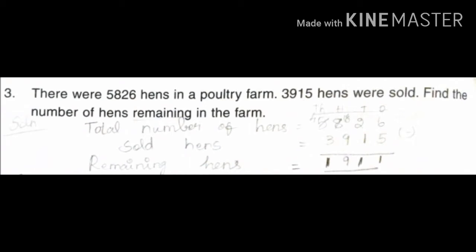Students, the third sum: There are 5,826 cans in a poultry farm. 3,915 cans were sold. Find the number of cans remaining in the farm.